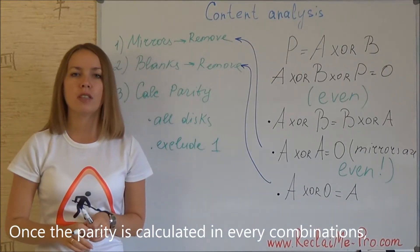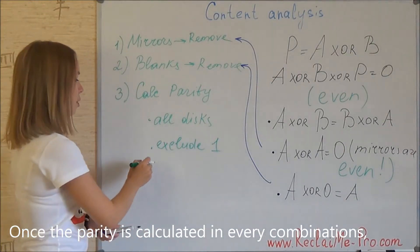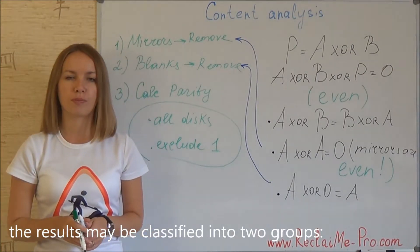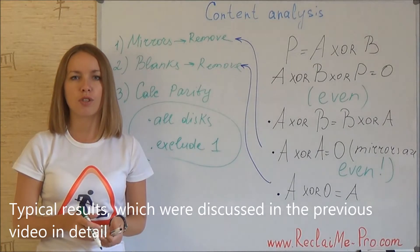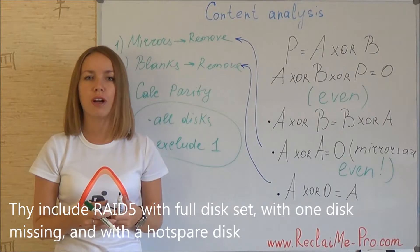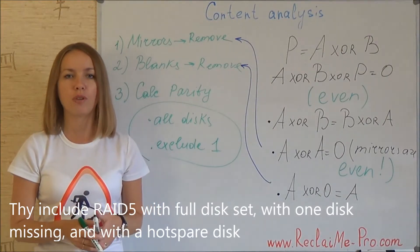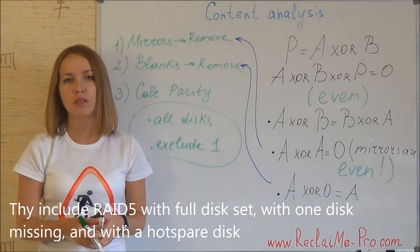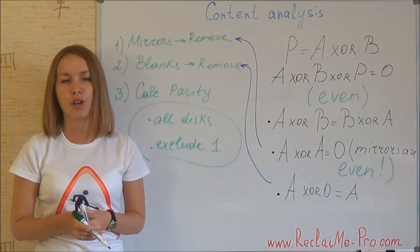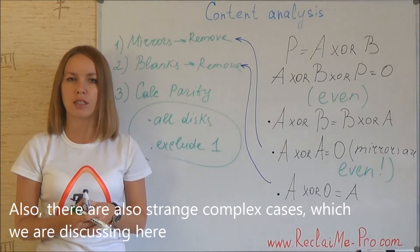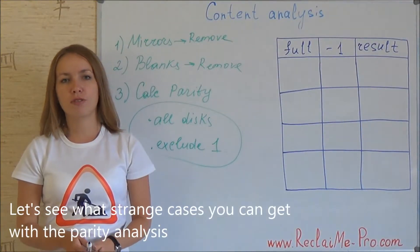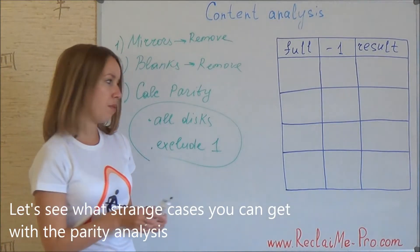Once the parity is calculated in every combination, the results may be classified into two groups. Typical results, which were discussed in the previous video in detail, include RAID 5 with the full disk set, with one disk missing, and with the hot spare disk — these you encounter most often. Also there are strange complex cases, which we are discussing here. Let's see what strange cases you can get with the parity analysis.